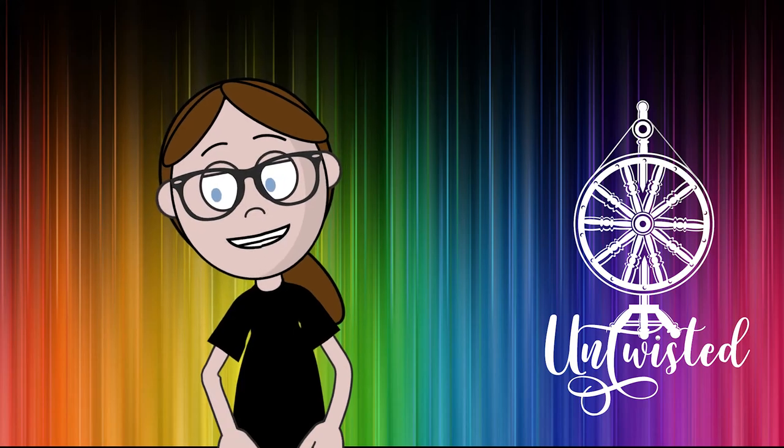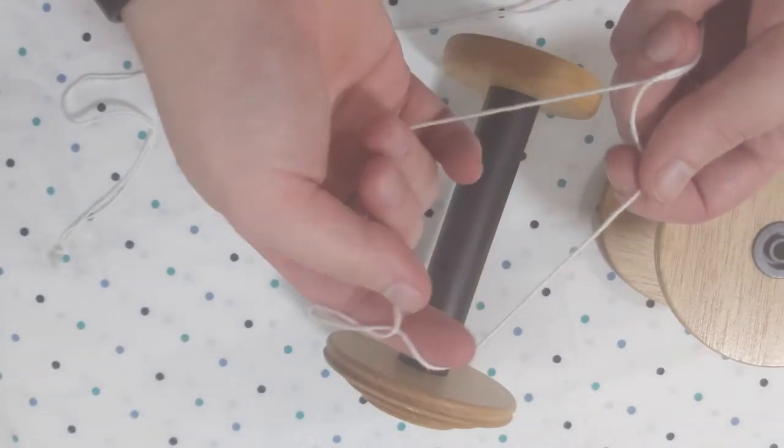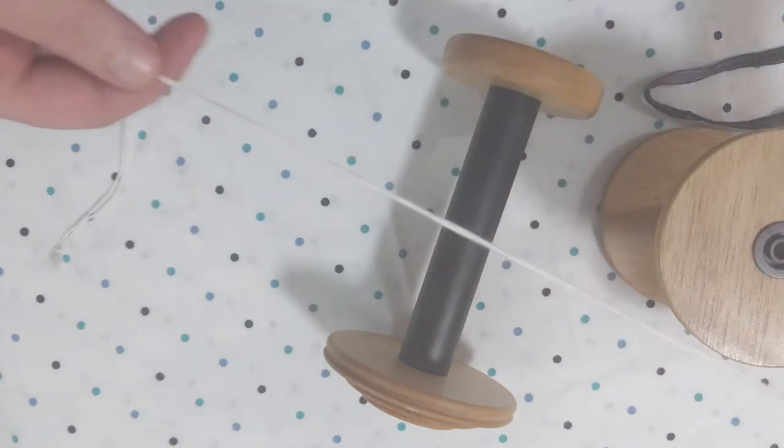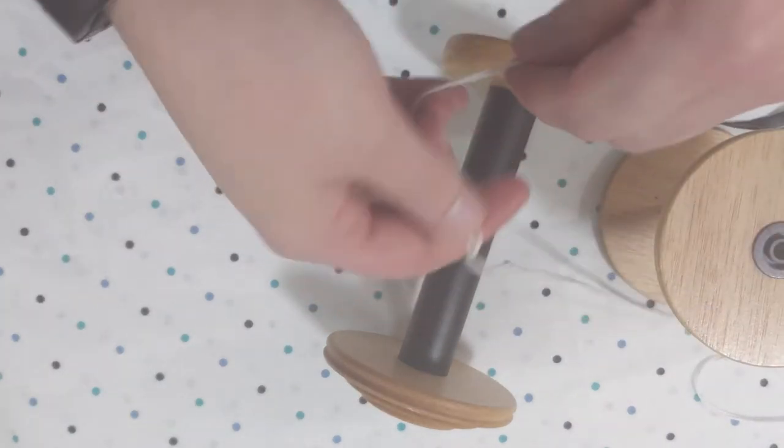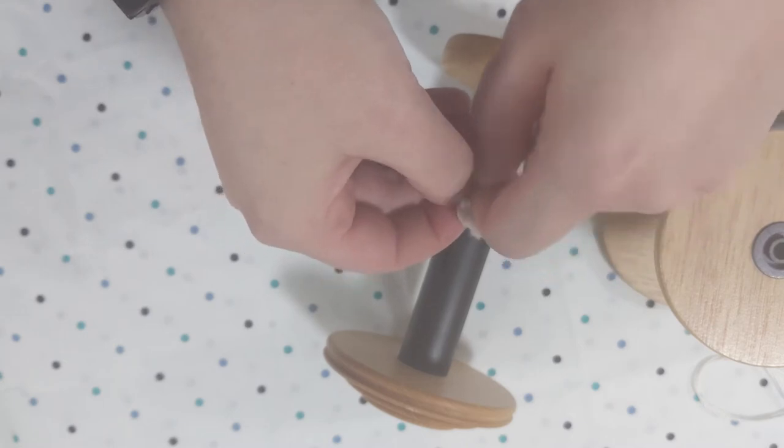We're actually going to cut a piece of yarn twice as long as what we want our leader to be. Fold that yarn in half and tie a square knot at the end to make it into one big loop.